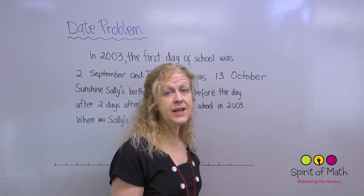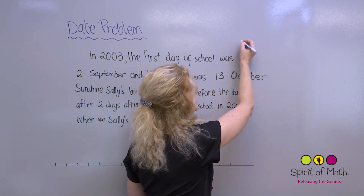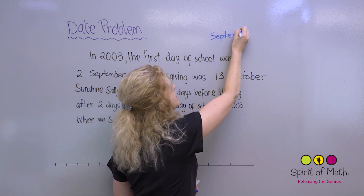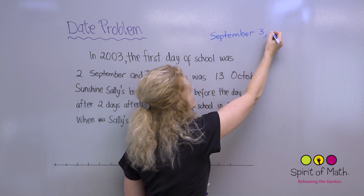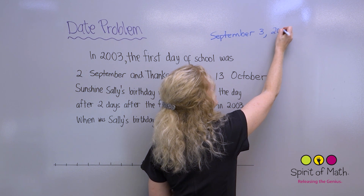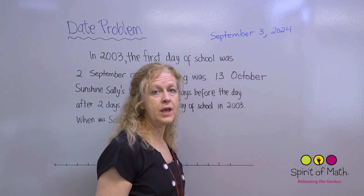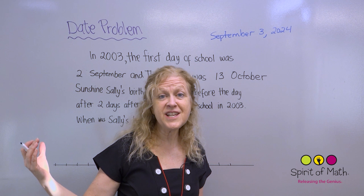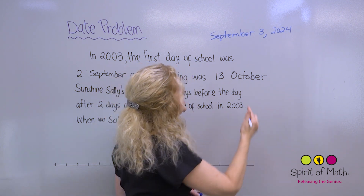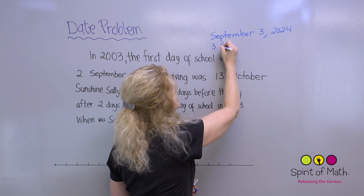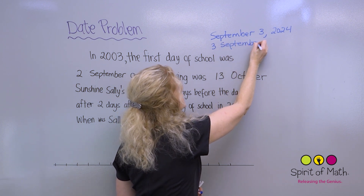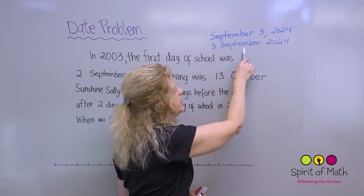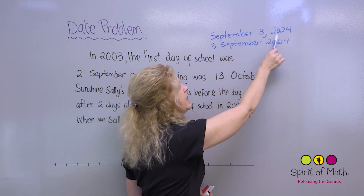The proper way to write a date if you are in the United States would be: September 3, 2024 — that's month, then day, then year. If you were in Canada, Britain, Pakistan, India, or many other parts of the world, you would write it as 3 September 2024, with no comma. Notice this is day, then month, then year.